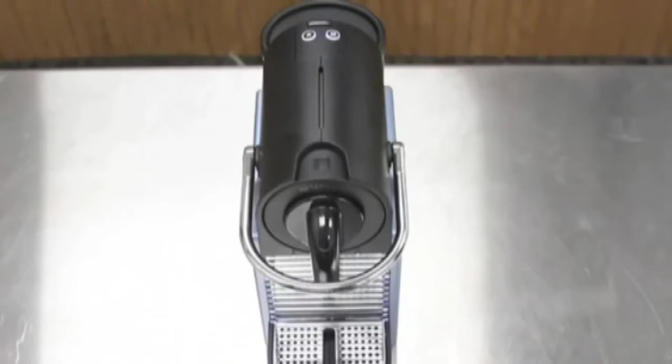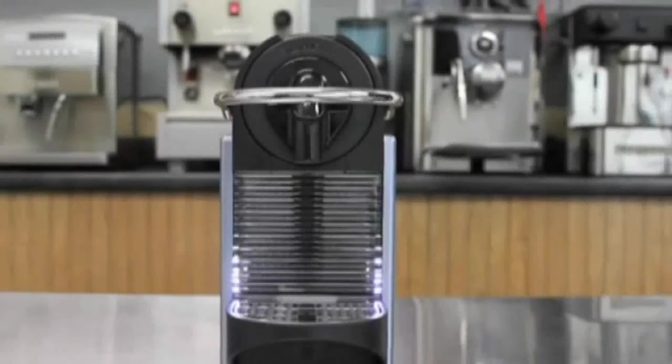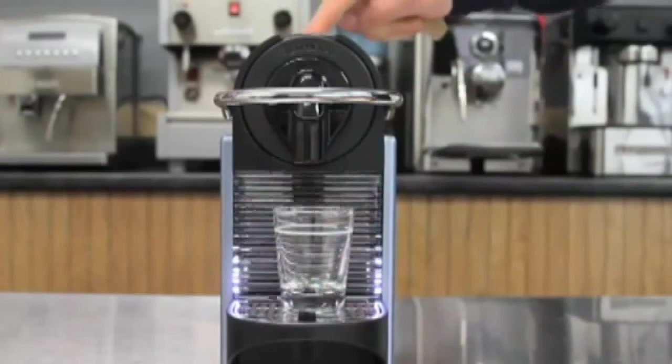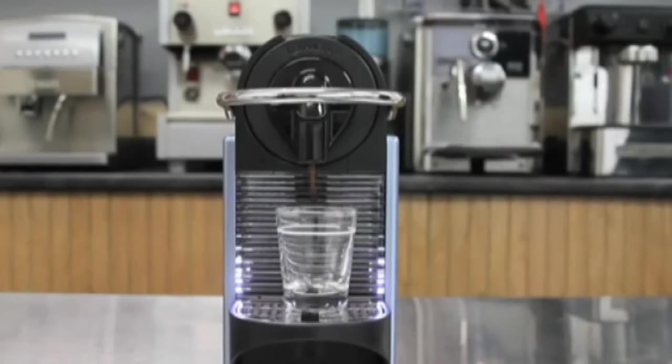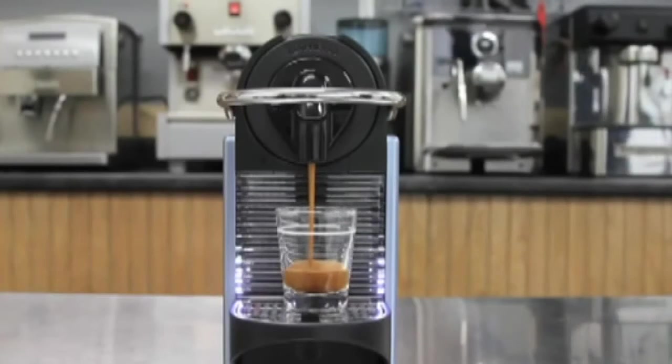The next step is to choose whether you want a single or a double shot. Remember, those are completely programmable, so you can choose to brew as much or as little as you'd like. Now all I have to do is add your glass. I'm going to select a single shot for this.